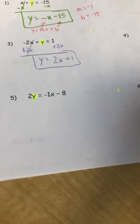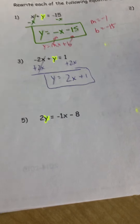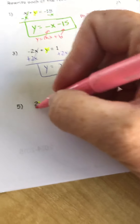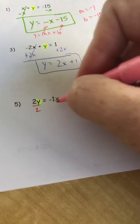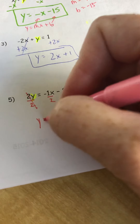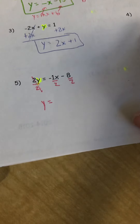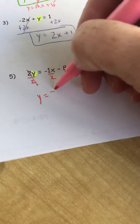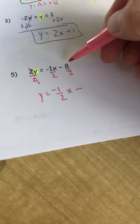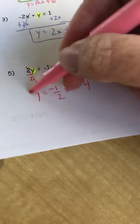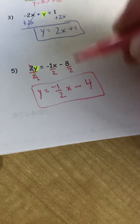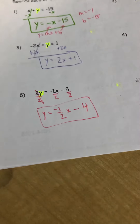The next one is a bit more difficult — it says 2y, so I need to get y by itself by dividing everything by 2. It cancels out because 2 divided by 2 is 1, giving negative 1 half x. And 8 divided by 2 is 4, so the answer is negative 1 half x minus 4. The slope is negative 1 half and the y-intercept is negative 4.